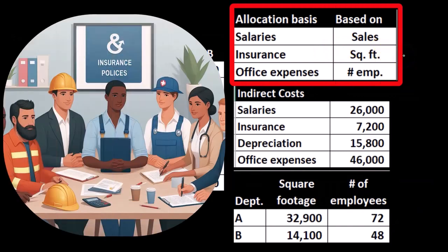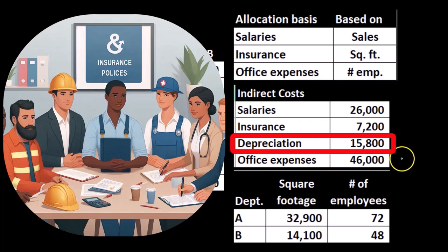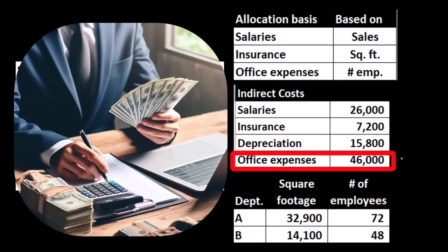Then we're going to have the depreciation — $15,800. Again, they're in the same building, A and B. We're going to apply out the depreciation and probably use the square footage there as well. Then we have the office expenses — $46,000 — office expenses for both A and B.